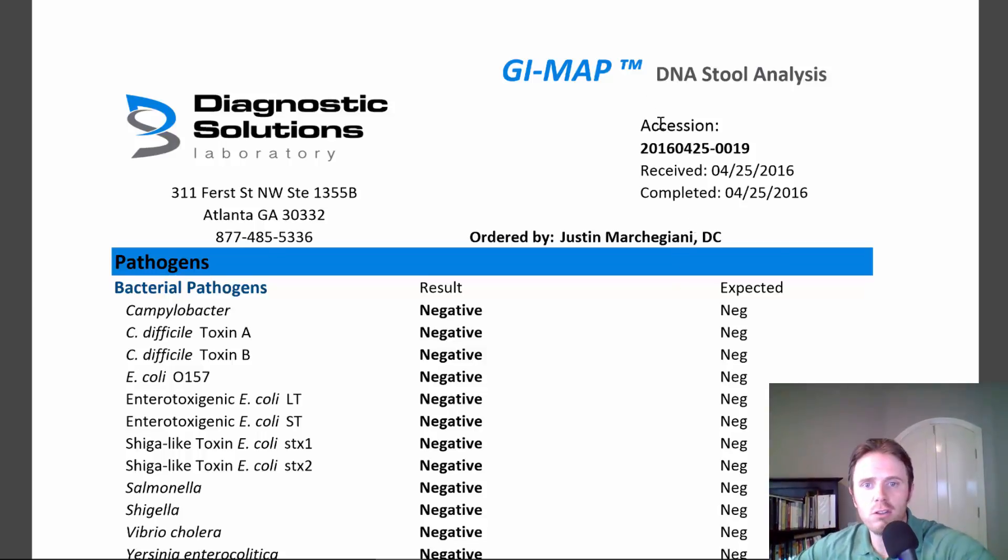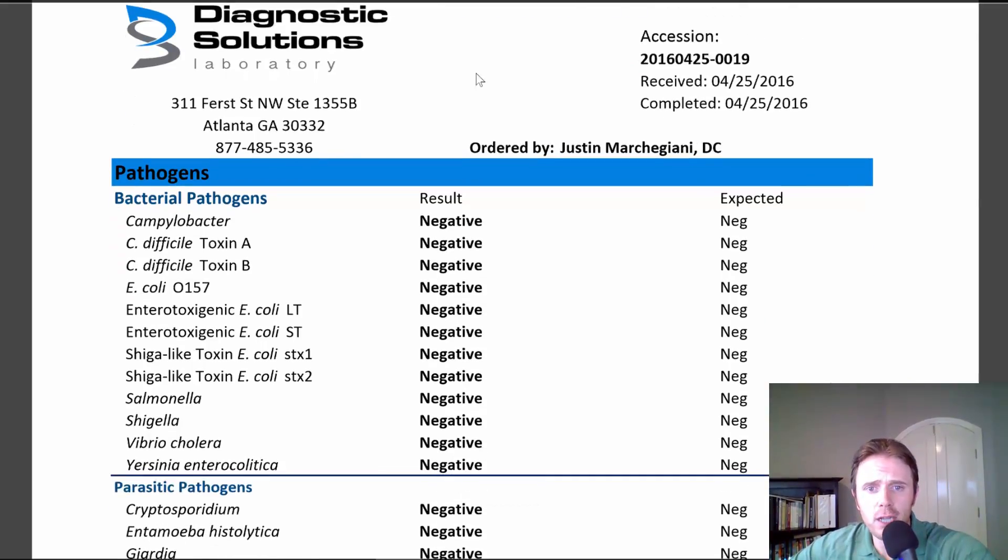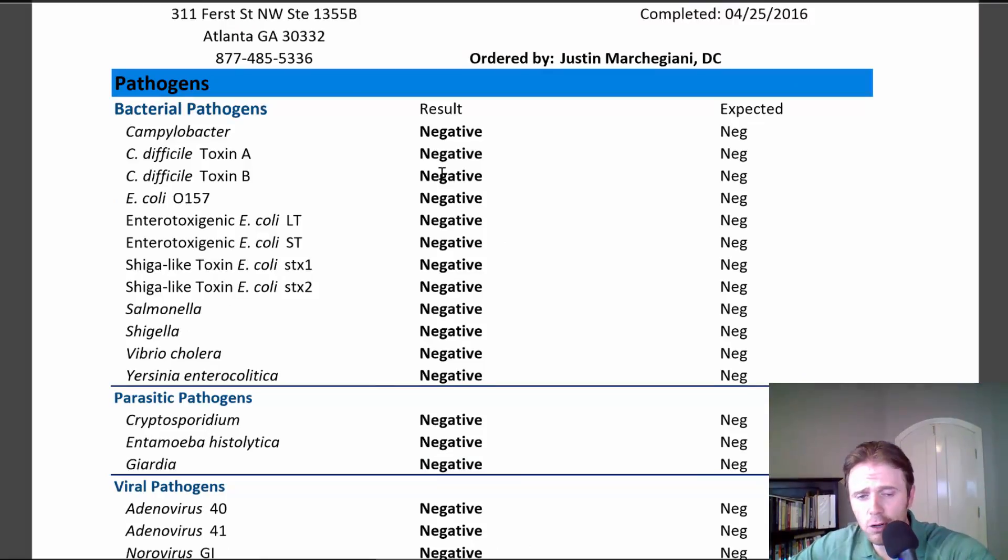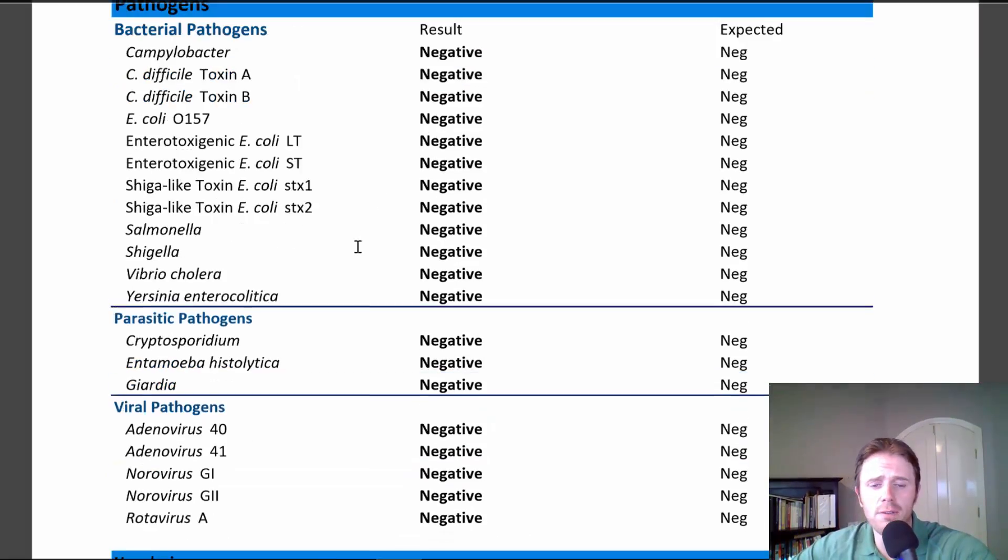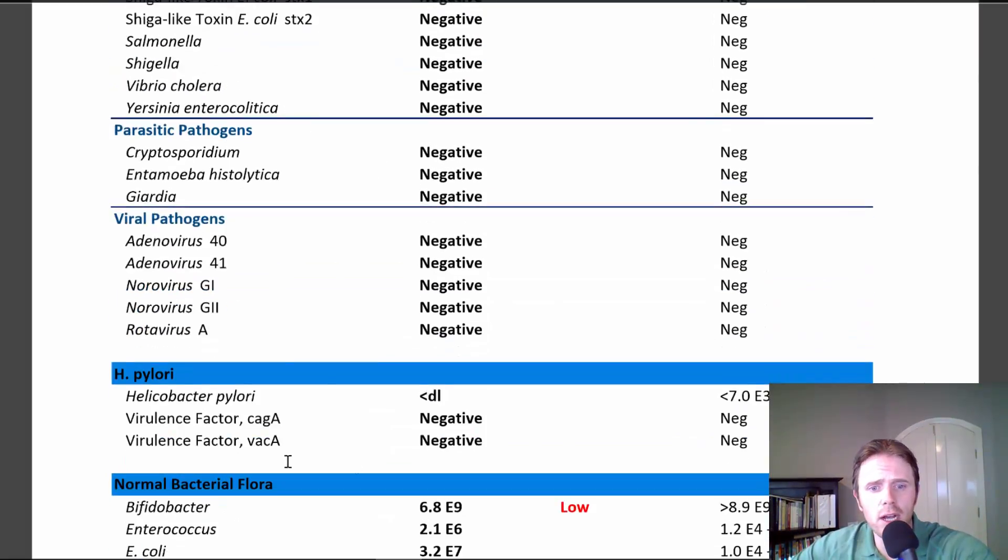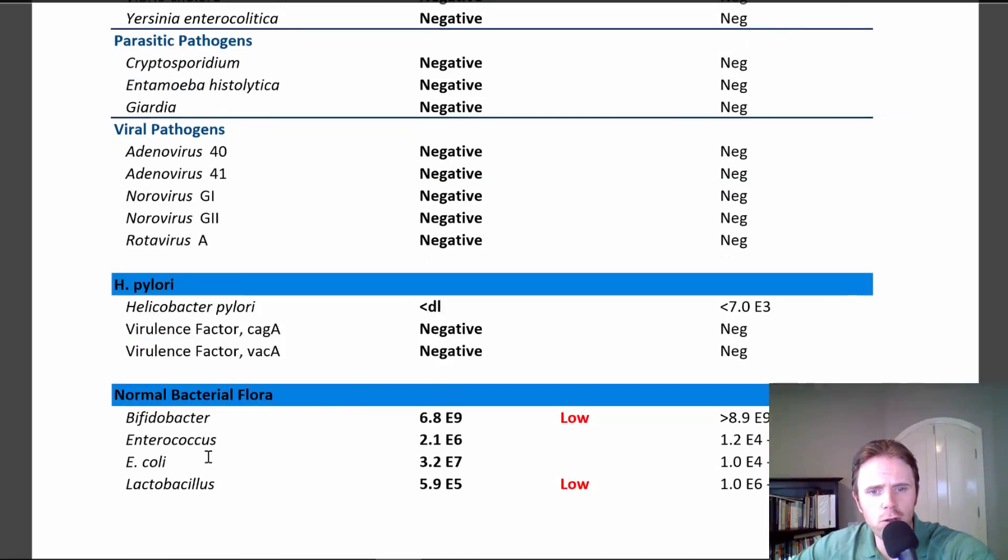We're already on this first test here. This is called the GI-MAP. It's a PCR, which stands for polymerase chain reaction DNA test, and it's going to look at various infections, whether it's pathogen bacteria, various parasitics, various viral infections, H. pylori.